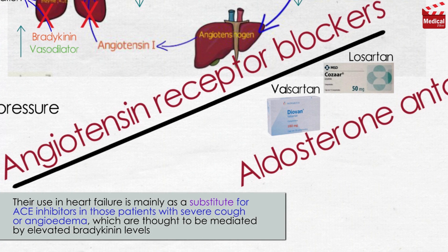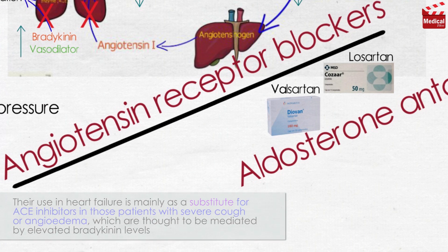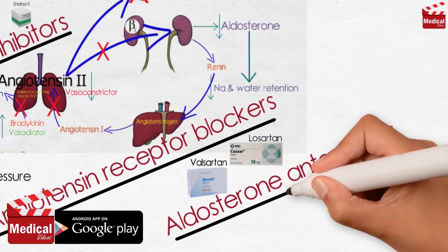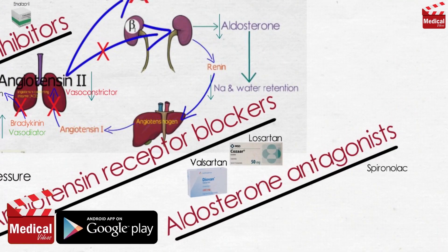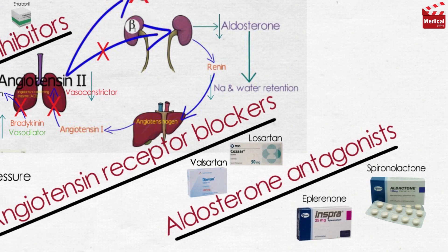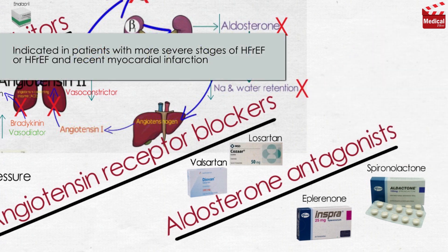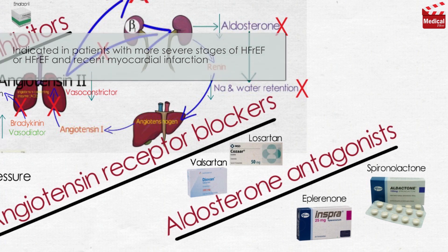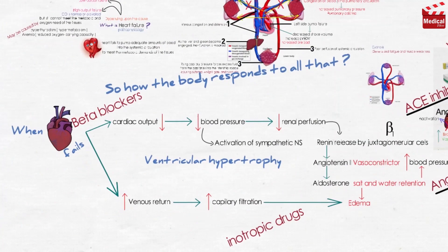The third group is aldosterone antagonists, such as spironolactone and eplerenone. They are antagonists of aldosterone, thereby preventing salt retention. Aldosterone antagonists are indicated in patients with more severe stages of heart failure with reduced ejection fraction, or heart failure with reduced ejection fraction and recent myocardial infarction.